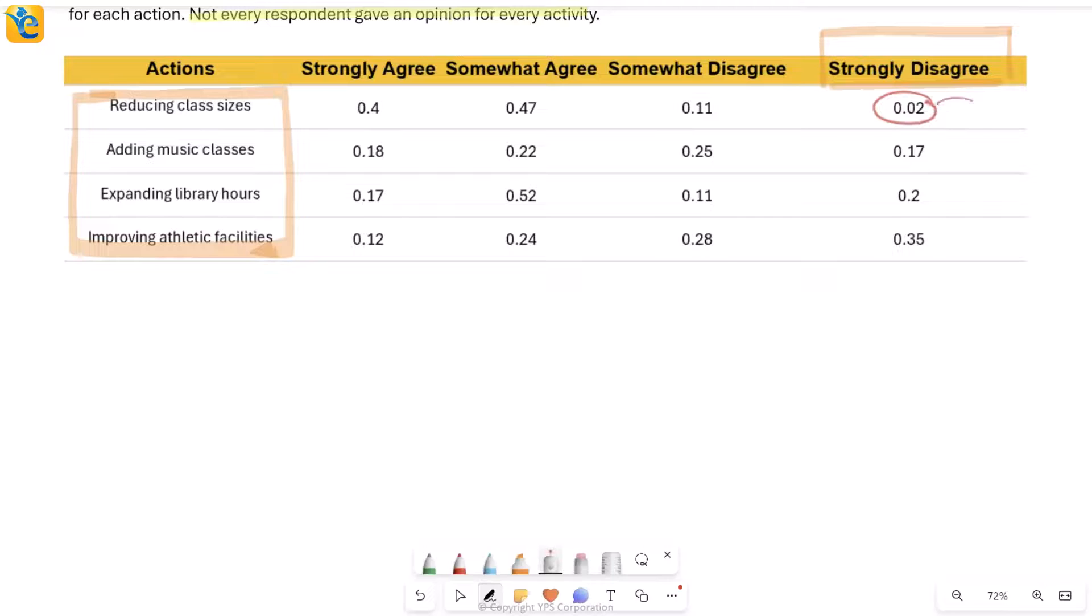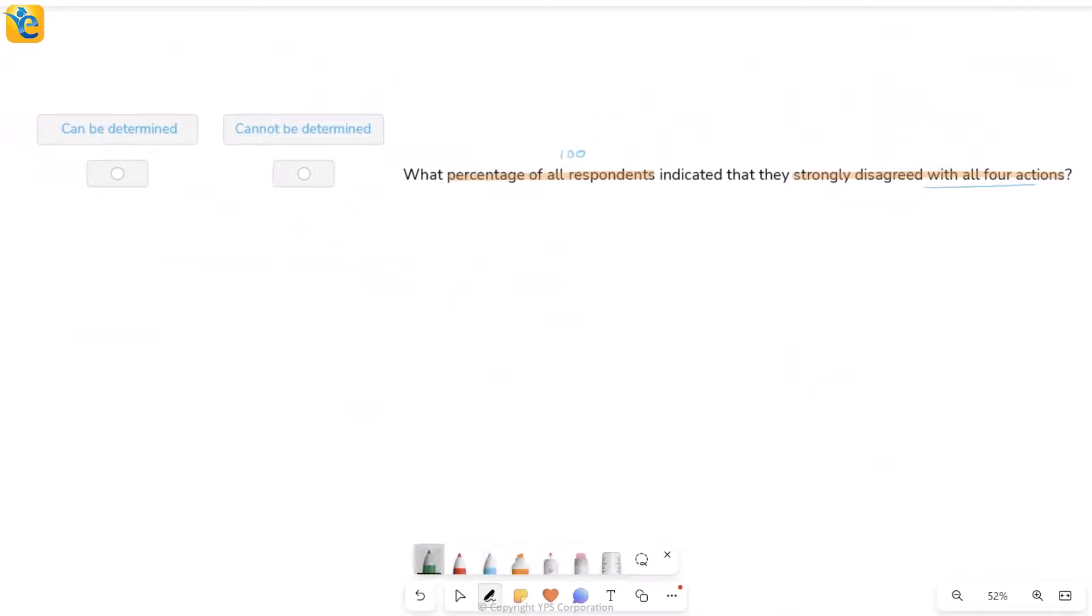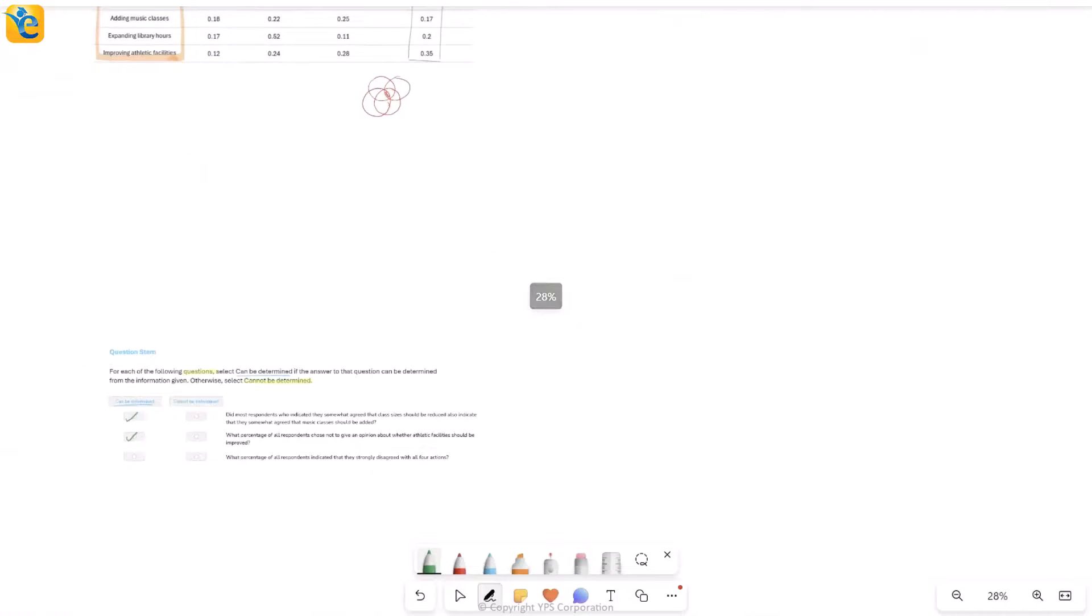For example, these two people who strongly disagree with reducing class sizes could be completely different from these 17 people who strongly disagree with adding music classes. On the other hand, they could also be the same people, which means these two people could belong to these 17 only. There could be perfect overlap. So I don't know whether these are distinct people or there is overlap. I don't know what to make out of this unless I know what people these are. You are talking about the intersection of all four circles. It's impossible for me to do that with just this much information. So here then, this one we will mark cannot be determined for.